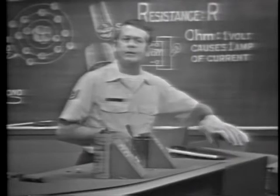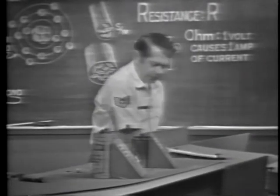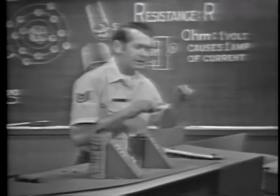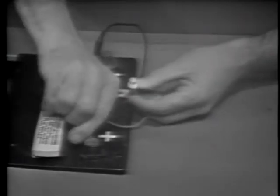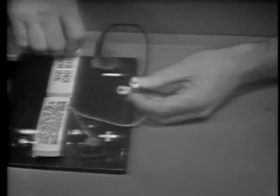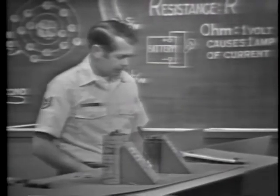In this lesson we'll discuss the factors that determine resistance, and we'll talk about resistors — devices designed to offer specific amounts of resistance. We've seen the effects of resistance many times in previous lessons. For example, why didn't this light bulb burn up when we connected it across the battery? It limits the current to the amount required to produce light. If it didn't limit current, it would burn up. So the bulb offers resistance to current flow.